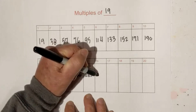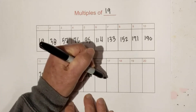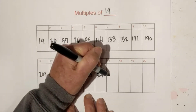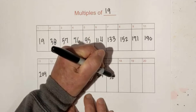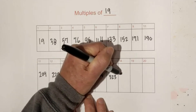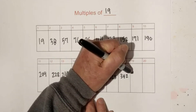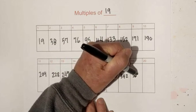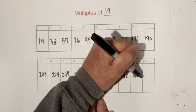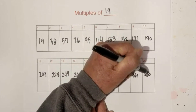304, 323, 342, 361, and then finally 380.